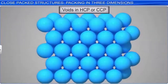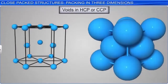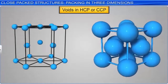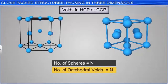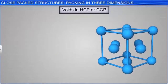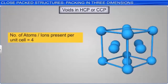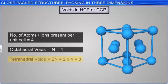Both hexagonal close packing and cubic close packing are equally efficient in terms of filling space; in both, 74 percent of the space in the crystal is filled up. In a close-packed structure, whether CCP or HCP, if there are N spheres per unit cell, then the number of octahedral voids equals N, while the number of tetrahedral voids equals 2N. For example, in a CCP arrangement with four atoms per unit cell, the number of octahedral voids is 4 and the number of tetrahedral voids is 8.